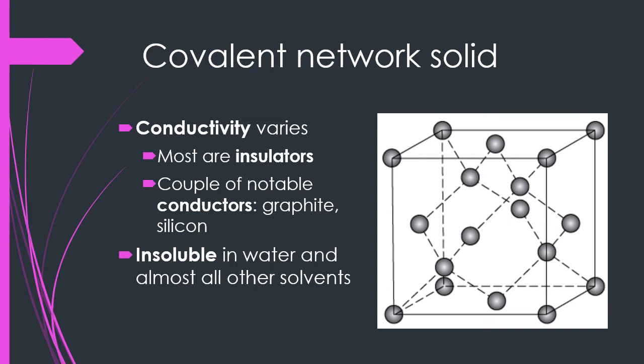Silicon is a metalloid, and therefore it starts to take on some metallic characteristics despite its bonds being categorized as covalent bonds for the most part. Covalent network solids are very insoluble in water and most other solvents. Generally, most covalent networks will only have one solvent they can dissolve in, and it will be something very similar to it in structure and unique to that specific covalent network solid.